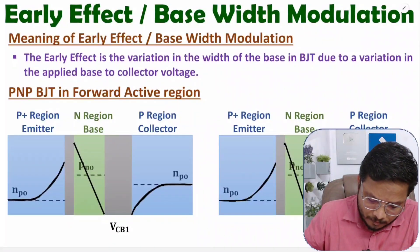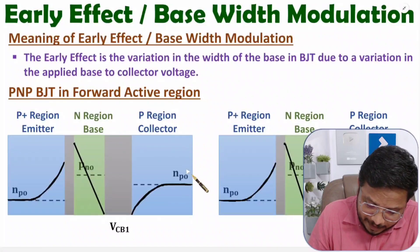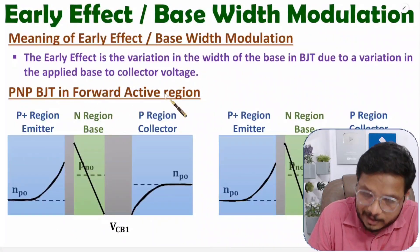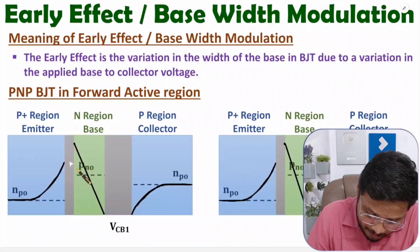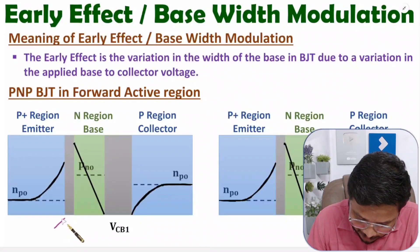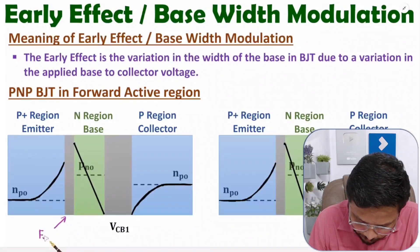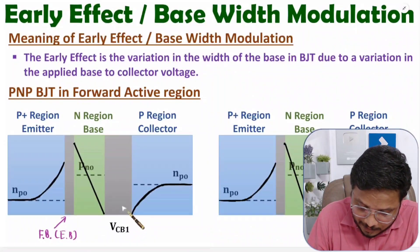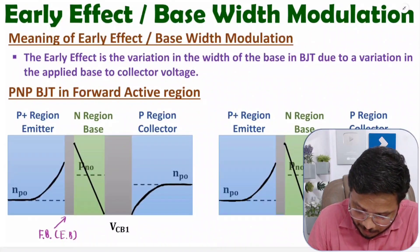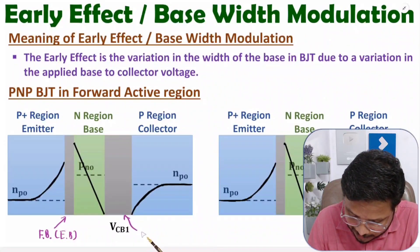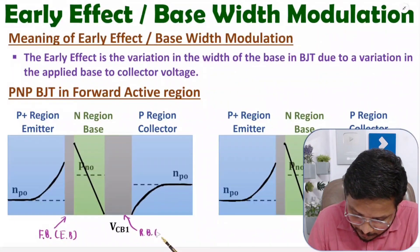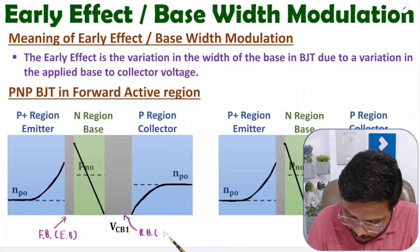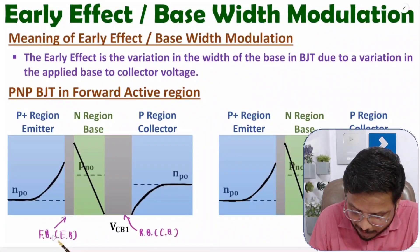Here we have a PNP transistor that we want to keep in the forward active region. This is the emitter-base junction — we keep it in forward bias. This is the collector-base junction — we keep it in reverse bias. That is the biasing condition for the forward active region.